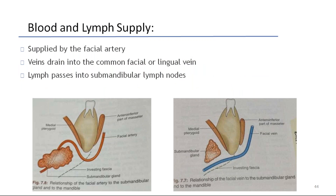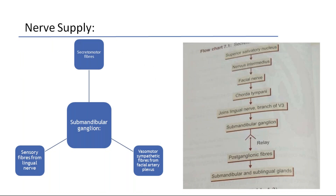Coming to blood and lymph supply: supplied by the facial artery; veins drain into the common facial or lingual vein. Lymph passes into the submandibular lymph nodes (level 1B), then drains to levels 2, 3, and 4. The relation of the facial artery to the submandibular gland is important because during submandibular gland excision, the facial artery will be encountered and must be carefully ligated to avoid severe bleeding.